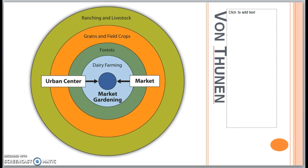Von Thunen made several assumptions as givens for his model. He assumed there is only one city with one central marketplace where all farmers sell their products to maximize profit. He assumed all farmland was equally farmable and productive, and that there is only one mode of transportation. Given these assumptions, Von Thunen allowed only one variable to change: the distance from the farm to the city market, reflected as transportation cost.